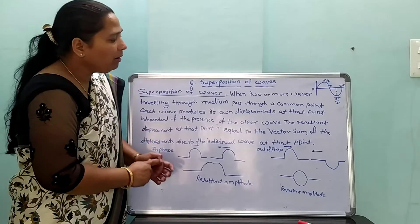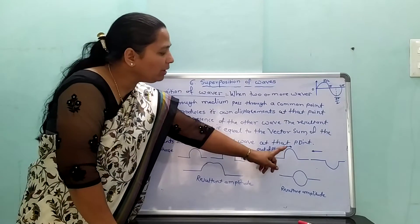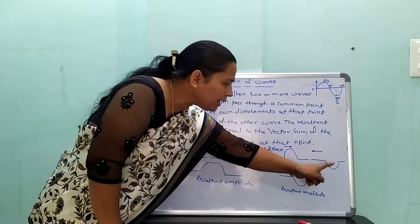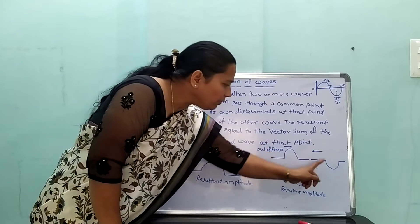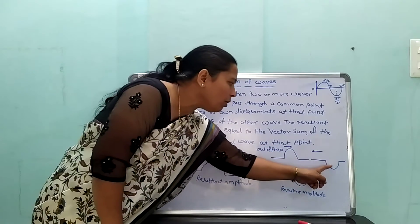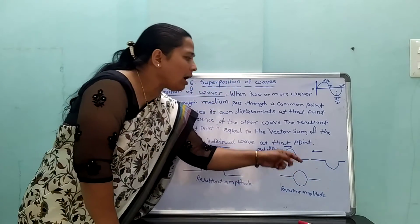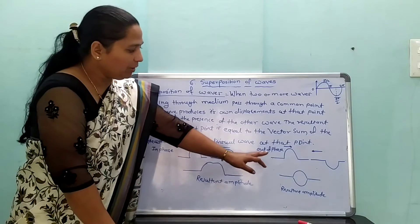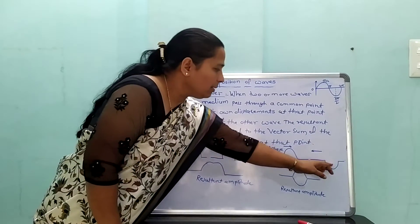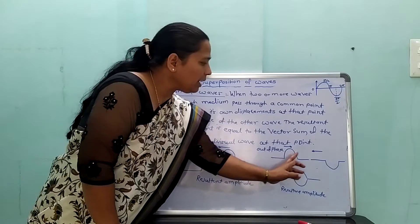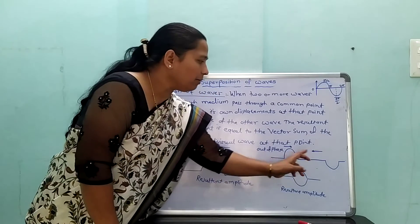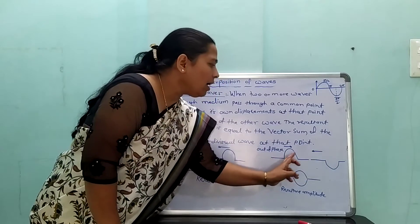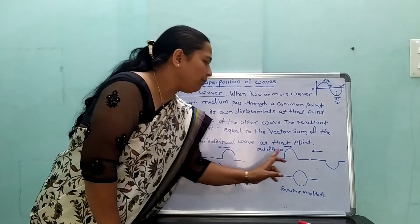When one waveform has a crest and another waveform has a trough, the two waveforms are out of phase. The phase difference between a crest and a trough is pi, meaning the two waveforms are out of phase.